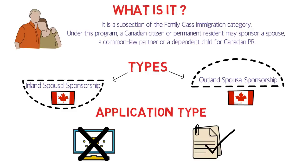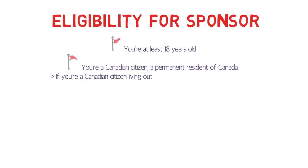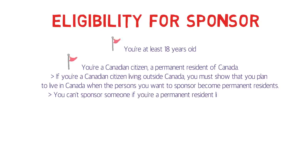To be a sponsor, you must be at least 18 years old and a Canadian citizen or permanent resident of Canada. If you are a Canadian citizen living outside of Canada, you must show that you plan to live in Canada when the person you want to sponsor becomes a permanent resident. You cannot sponsor someone if you are a permanent resident living outside of Canada — you must be living in Canada to apply for your spouse's PR.